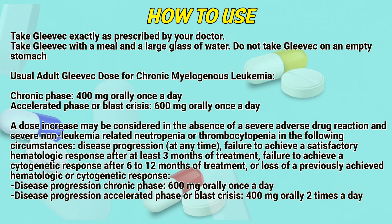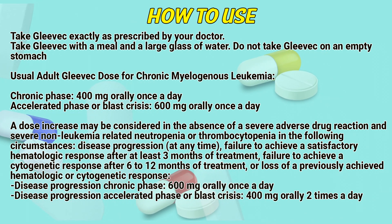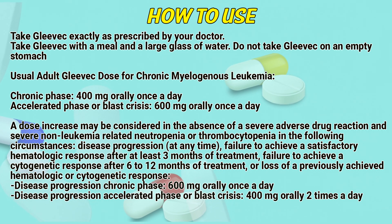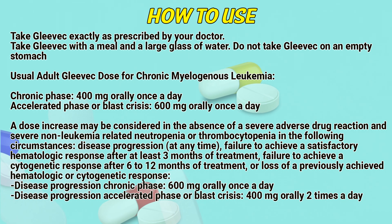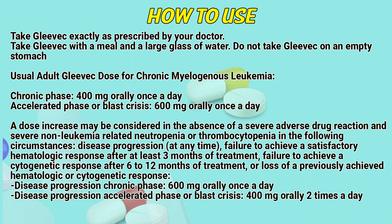Usual adult Glivik dose for chronic myelogenous leukemia: Chronic phase — 400mg orally once a day. Accelerated phase or blast crisis — 600mg orally once a day.